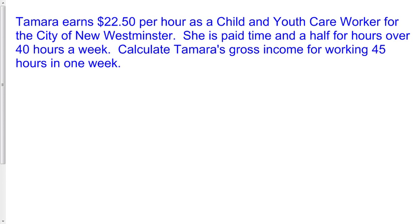Tamara earns $22.50 per hour as a child and youth care worker for the City of New Westminster. She is paid time and a half for hours over 40 hours a week. Calculate Tamara's gross income for working 45 hours in one week.